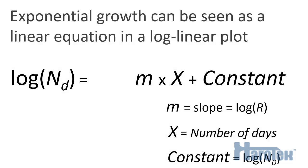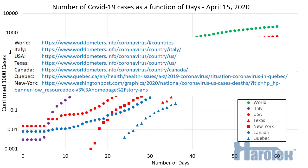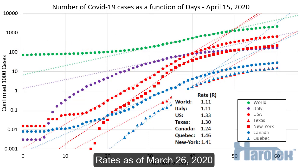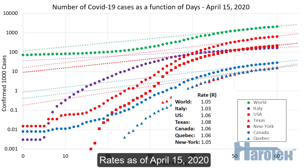In the previous video, we saw that if we plot the number of COVID-19 cases for a given region in a log-linear plot, the slope of that curve is the log of the rate of the exponential growth. So if we go back to the curves for the different regions and we look at the rates as of March 26th, we can see that those rates vary between 1.11 and 1.46. Looking at the slopes as of April 15th, we can see that the rates have decreased to values between 1.03 and 1.08.